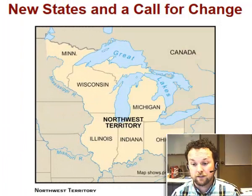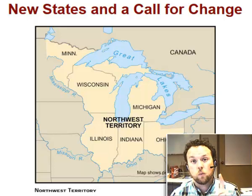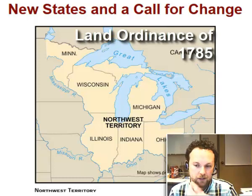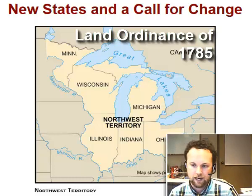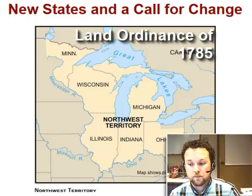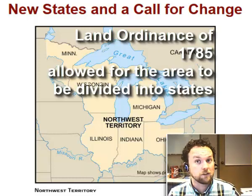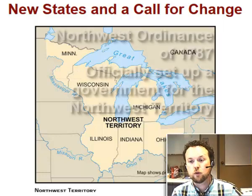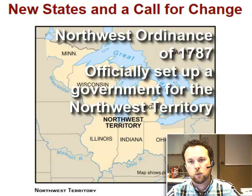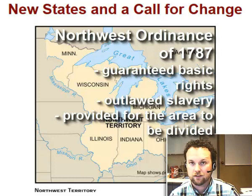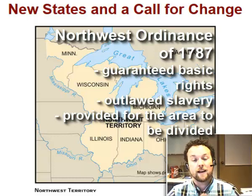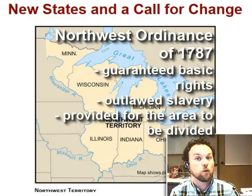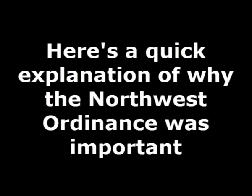Despite its difficulties, Congress was able to pass the Land Ordinance of 1785, which governed the Northwest Territory — present-day Ohio, Michigan, Indiana, Wisconsin, and parts of Illinois and Minnesota. It allowed the area to be divided up into future states. In 1787, Congress passed the Northwest Ordinance, which officially set up a government for the Northwest Territory, guaranteed basic rights to settlers, outlawed slavery, and provided for the area to be further divided into states.